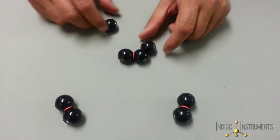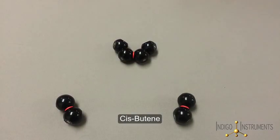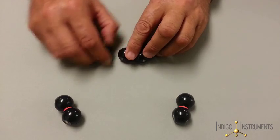By adding two methyl groups we can show you cis butene and rotating shows trans butene.